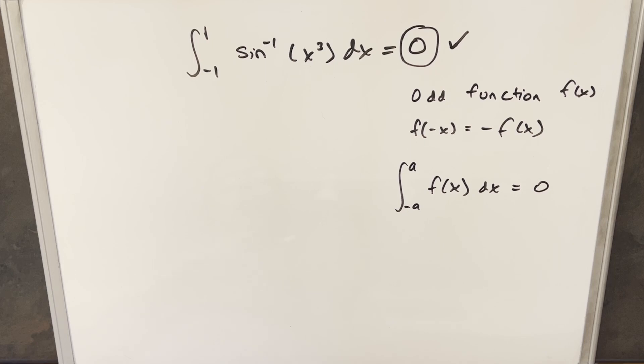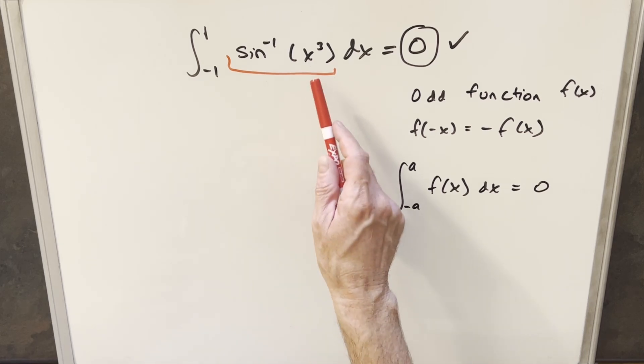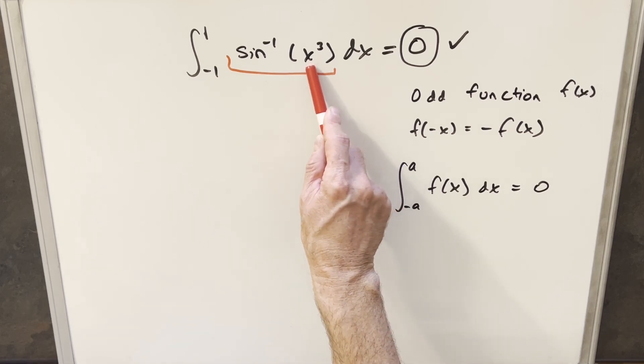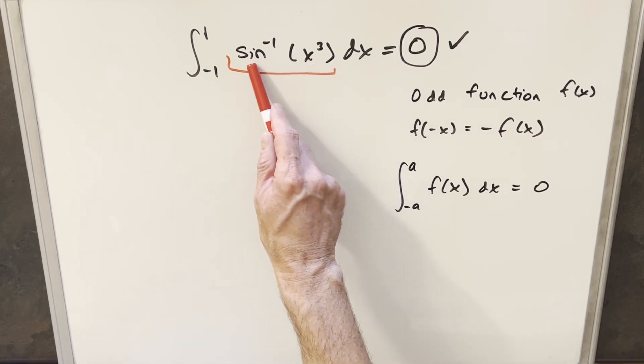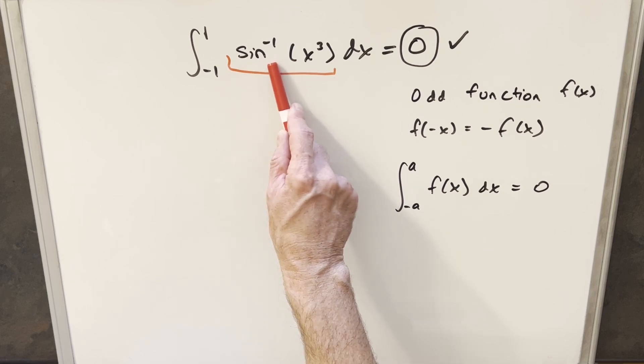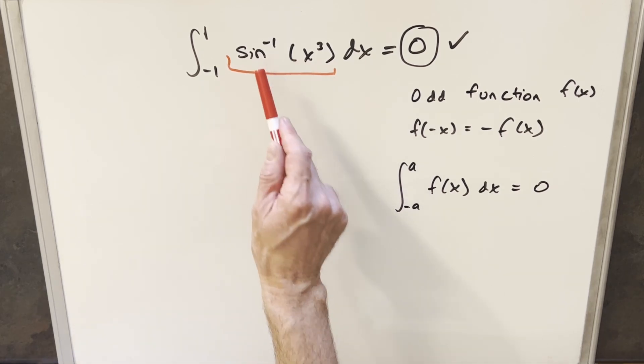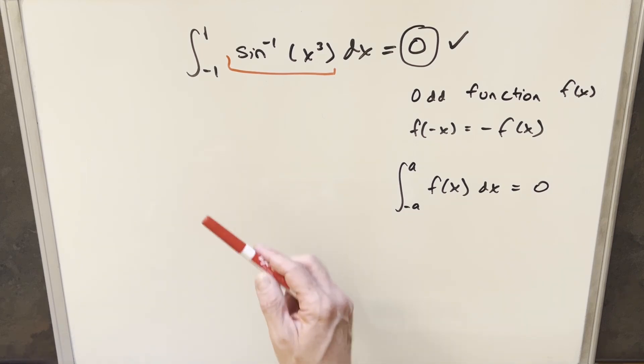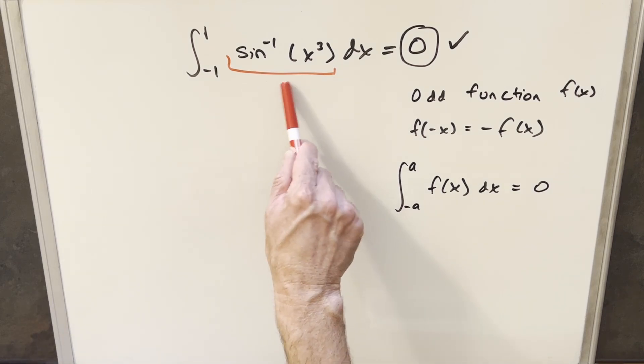But then one question you may have before we finish for real is how do we know that this is actually an odd function? Well, there's a quick way to do it. First of all, if you recognize that x cubed is an odd function, and you recognize that arcsine is an odd function, well, the composition of odd functions is also an odd function. So that's kind of the quick way to identify it, determine that this is odd.